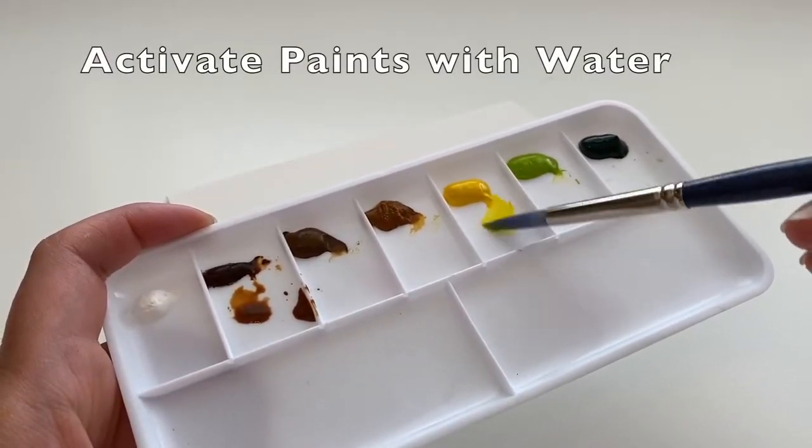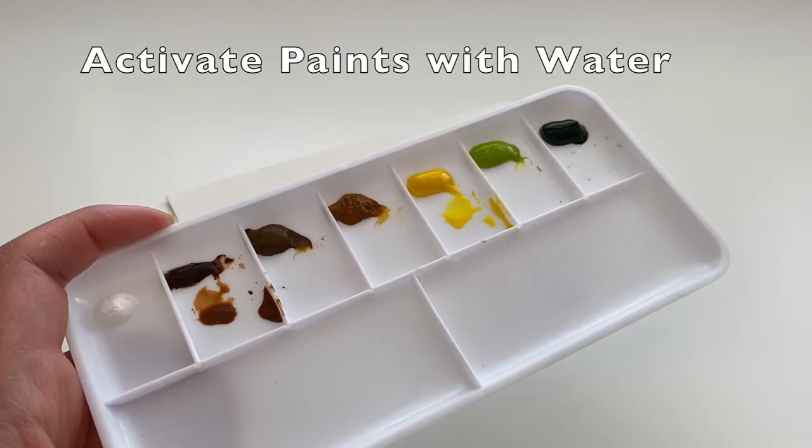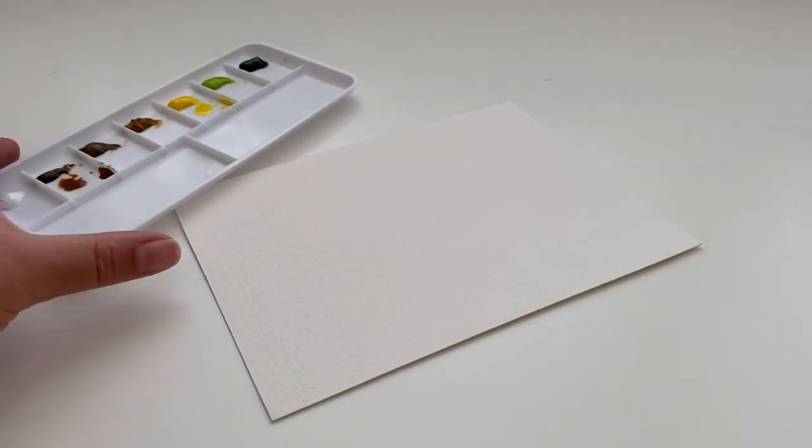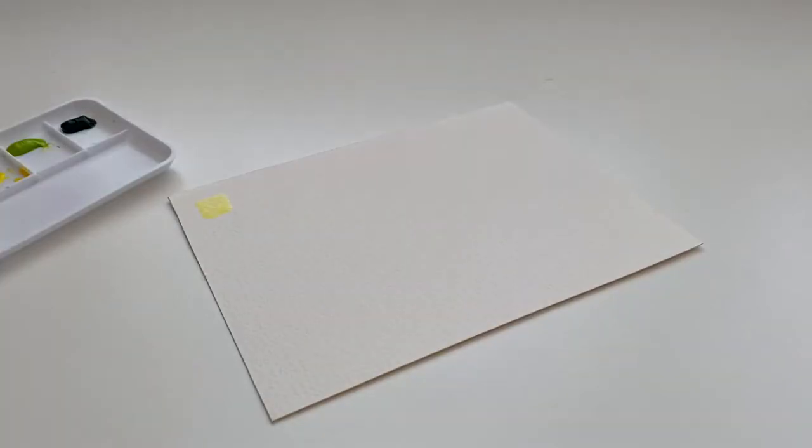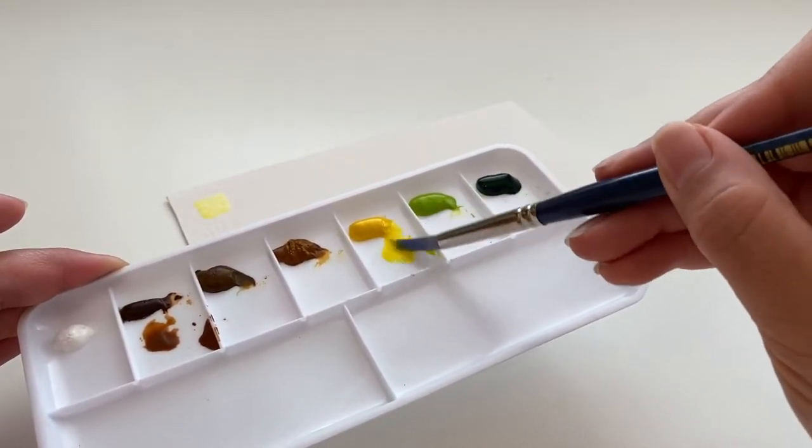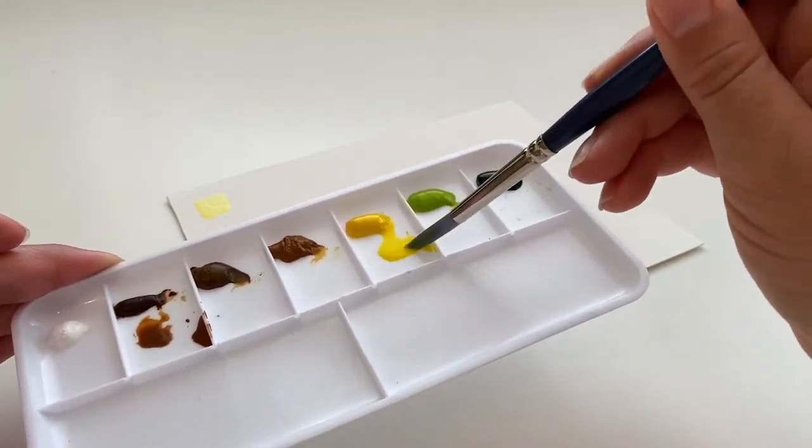When you get your kit the paints will be dry. In order to activate them use a small water droplet and gently pat the edge of the paint to invite some of that color into that water droplet. The lightest shade that you'll get should be something referred to as a tea consistency, so not very opaque, quite sheer.